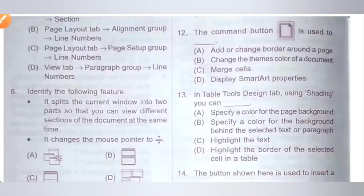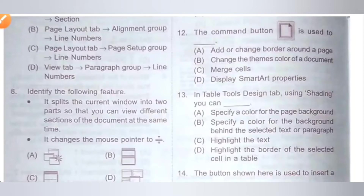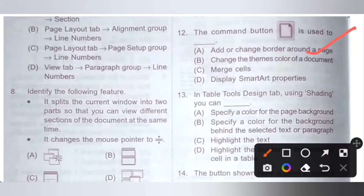Twelfth question: the command button shown is used to do what? Option A: add or change borders around a page. B: change the theme's color of a document. C: merge cells. D: display SmartArt properties. The given command button is Page Border — it helps to add or change borders around a page. Option A is the correct answer.